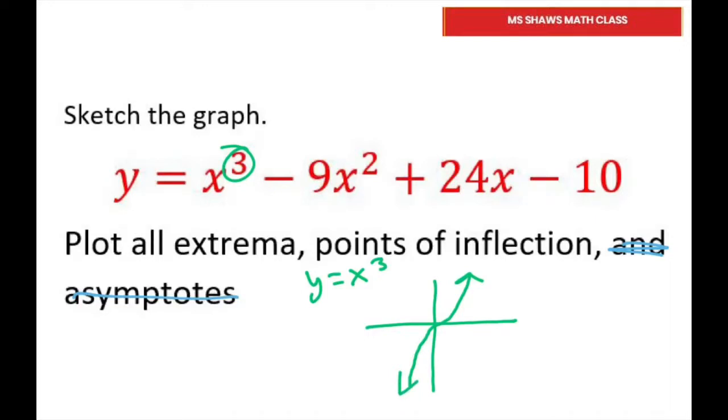We also know that it has at most two turning points. Because x to the n for a polynomial has at most n minus 1 turning points. Since we have x to the 3rd power, that's going to be 3 minus 1, so we can have at most 2.